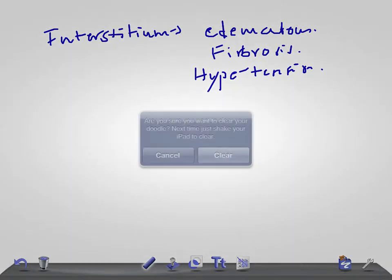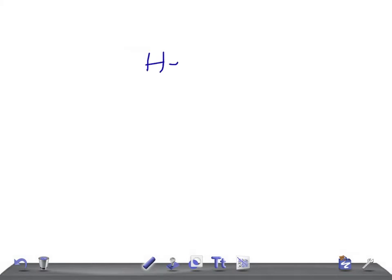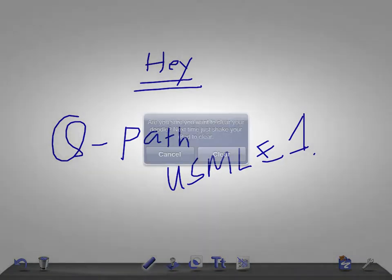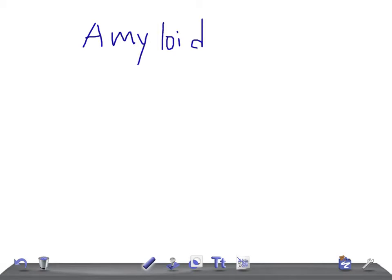Hey guys, welcome back. This is quick pathology for USMLE Step 1. Today we're going to talk about amyloidosis — specifically amyloidosis of the spleen. We'll cover two aspects: the gross features, how it looks, and the microscopic features.